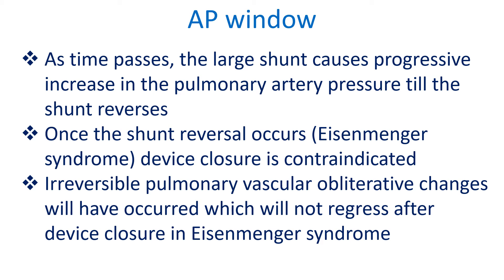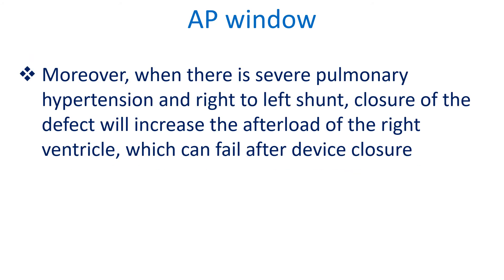Once shunt reversal occurs, device closure is contraindicated. Irreversible pulmonary vascular obliterative changes will have occurred which will not regress after device closure of Eisenmenger syndrome. Moreover, when there is severe pulmonary hypertension and right-to-left shunt, closure of the defect will increase the afterload of the right ventricle, which can fail after device closure.